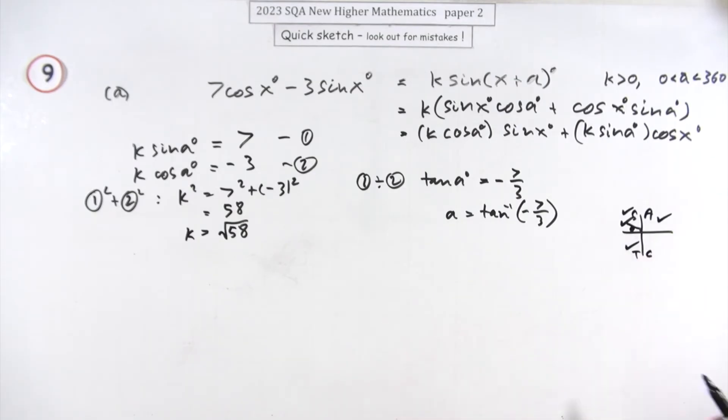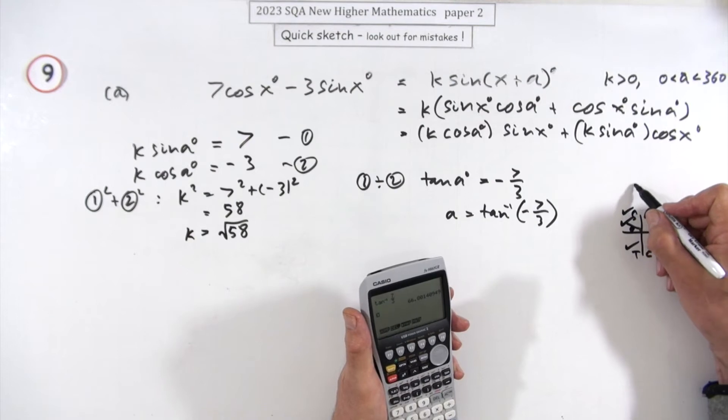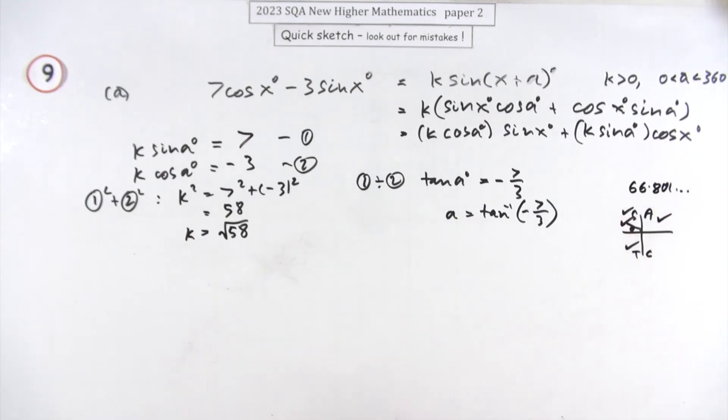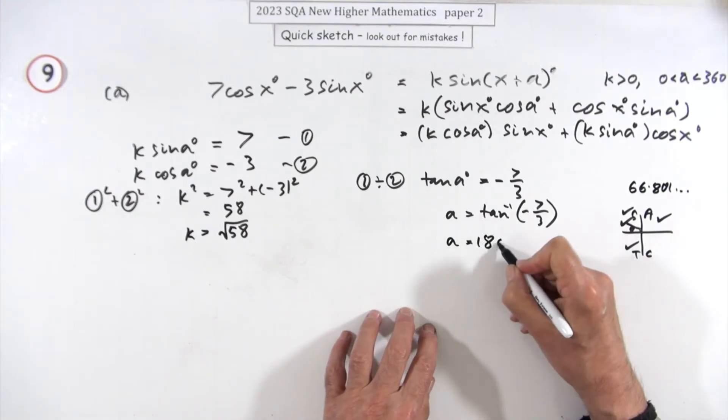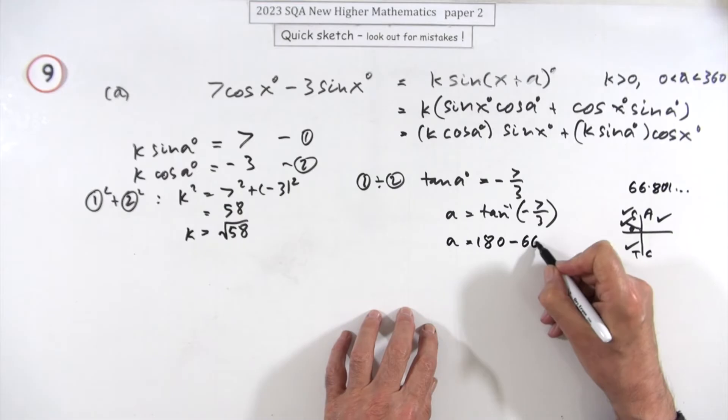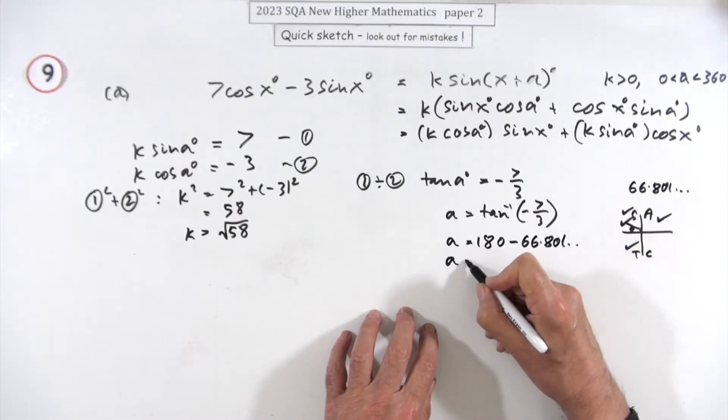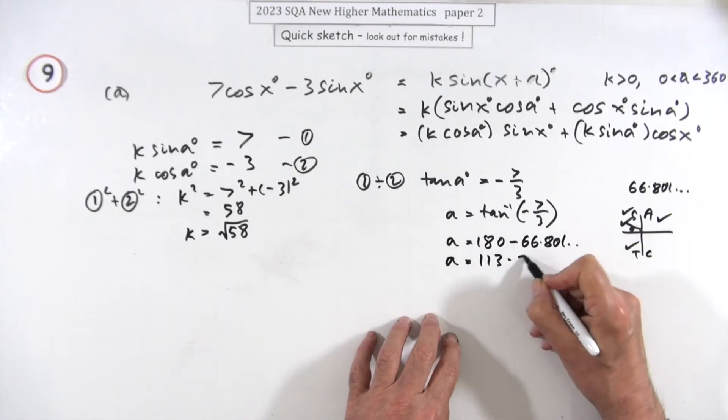What is the angle? Just taking the positive part, just to get the acute one, it's 66.801 and so on. Which means that angle α is going to be on this side, it's going to be 180 minus that, minus 66.801 and so on. So α is going to be, just to put it down to shorten it off, 113.2.